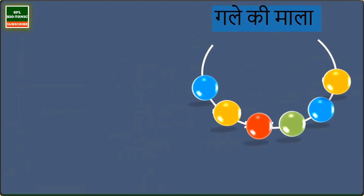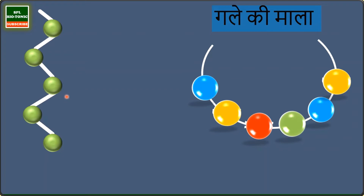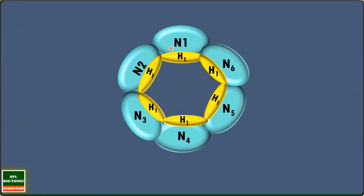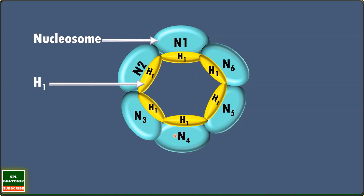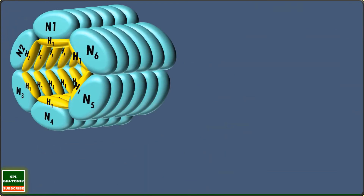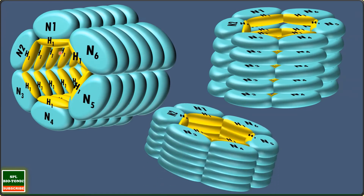When we see the nucleosome structure under higher magnification of a microscope, we can see a beads-on-a-string structure — similar to a necklace, or in Hindi, 'gale ki mala.' These individual units are called nucleosomes, with DNA coiled around histone proteins. Six nucleosomes come together with H1 protein to form further coiling called the solenoid structure, which has a diameter of 30 nanometers.